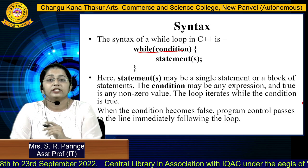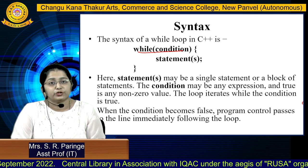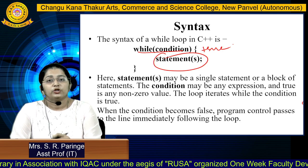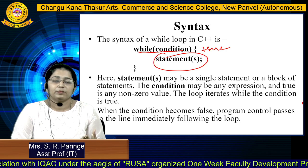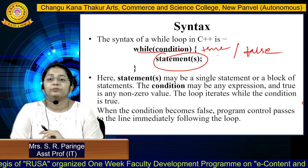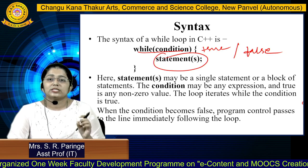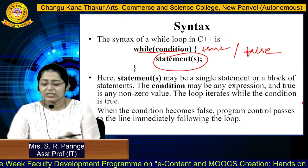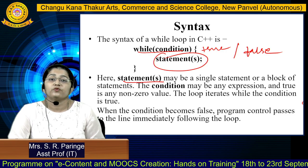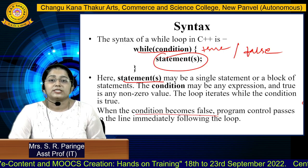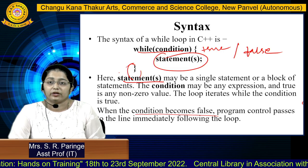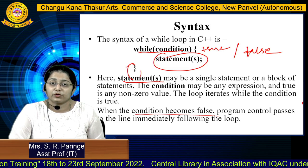Now we will see the syntax of while loop. The syntax is: first you write the keyword 'while' followed by the condition, and then the statement. Until and unless this condition is true, one or multiple statements get printed. Once the condition becomes false, the statement will not execute and the program will terminate. The statement can be a single statement or a block of statements, and the condition is an expression. When the condition becomes false, program control passes to the line immediately following the loop.